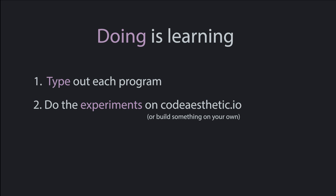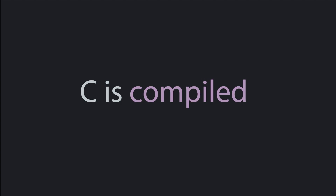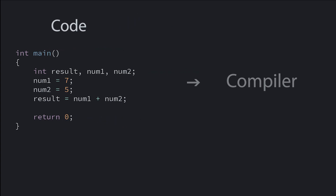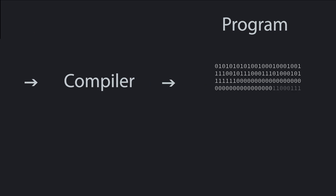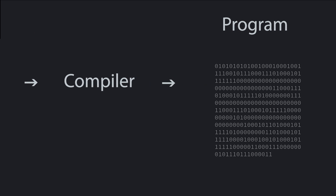So, how do we get started? To get going, you're going to need the tools of the trade. The most important is the compiler. C is a compiled language, which means the code can't be run directly by the computer. The code is handed over to a compiler, who reads the code, checks it for flaws, and if it's all good, spits out a program made of binary. The binary is what can be fed into the computer to be run.